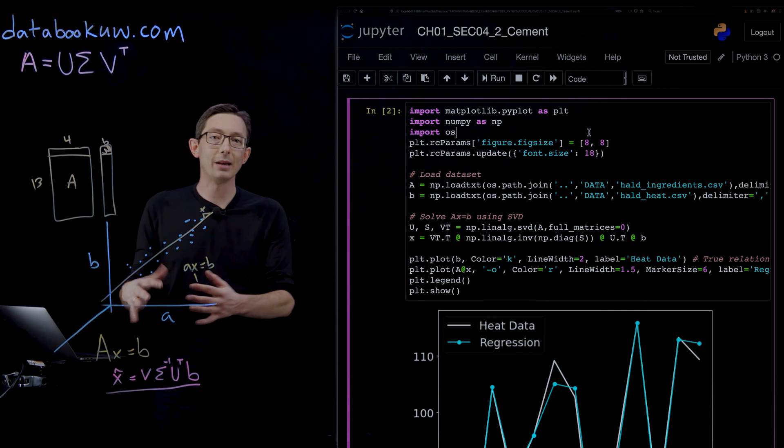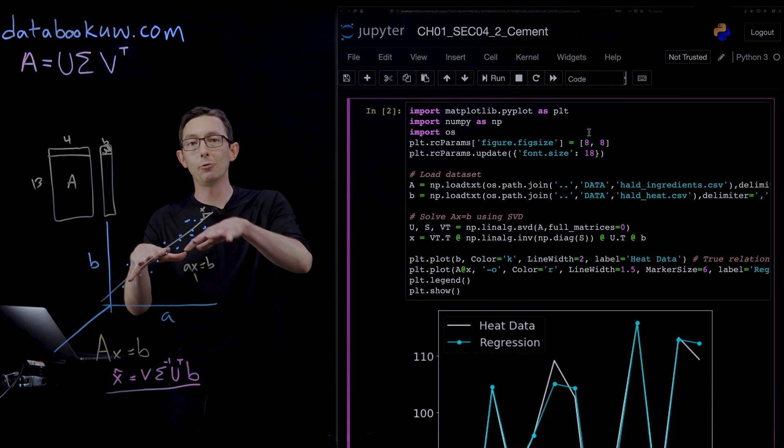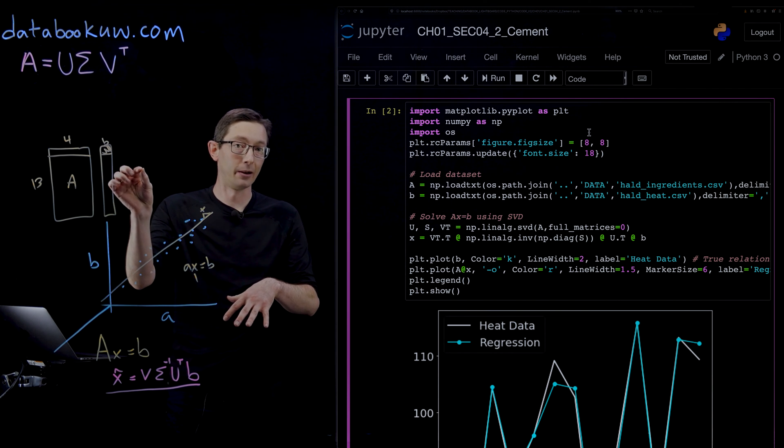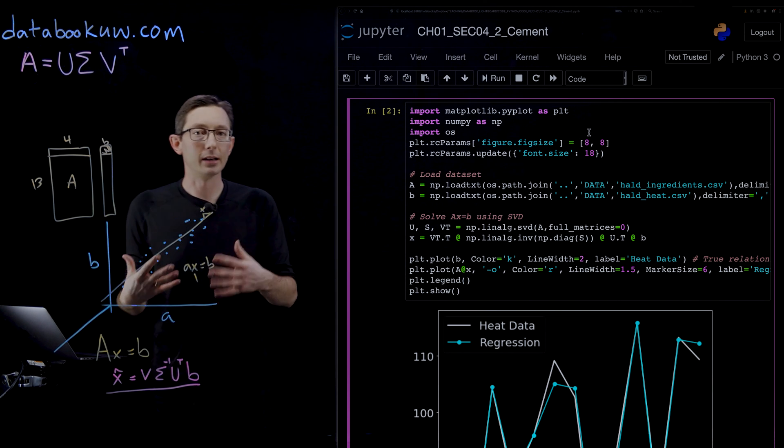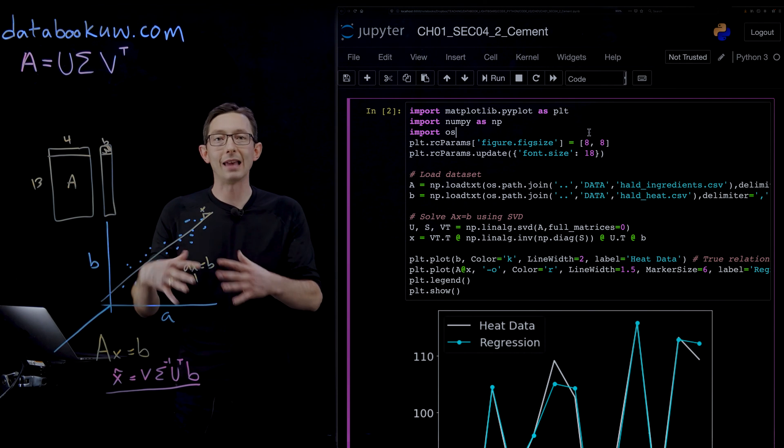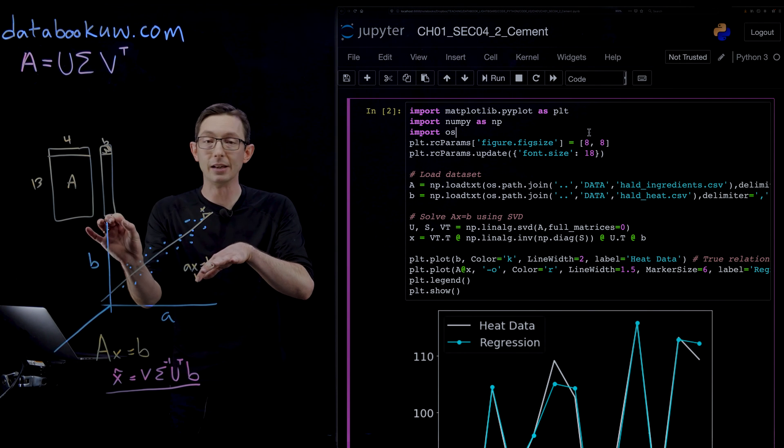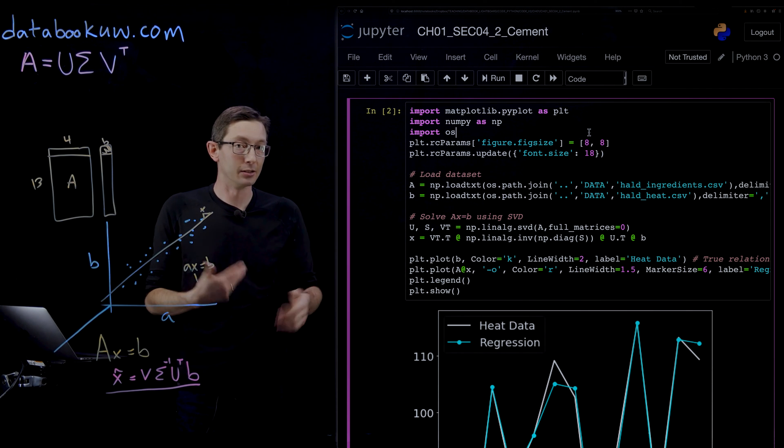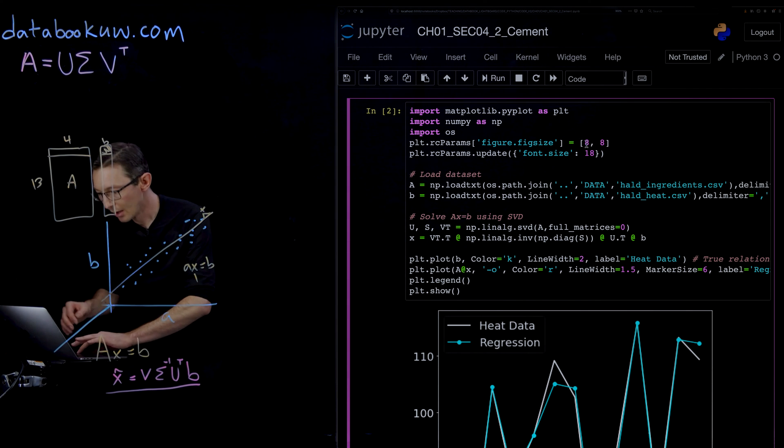We're going to find the best fit slope X that maps these four features into this outcome heat variable. In principle, that model would allow us to predict the heat generation from future mixtures that we haven't actually tried out yet.